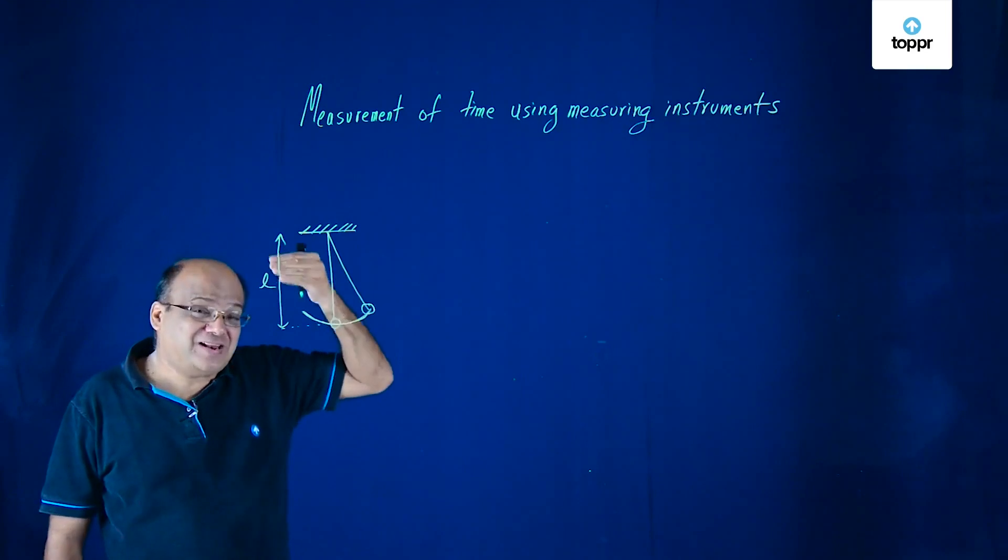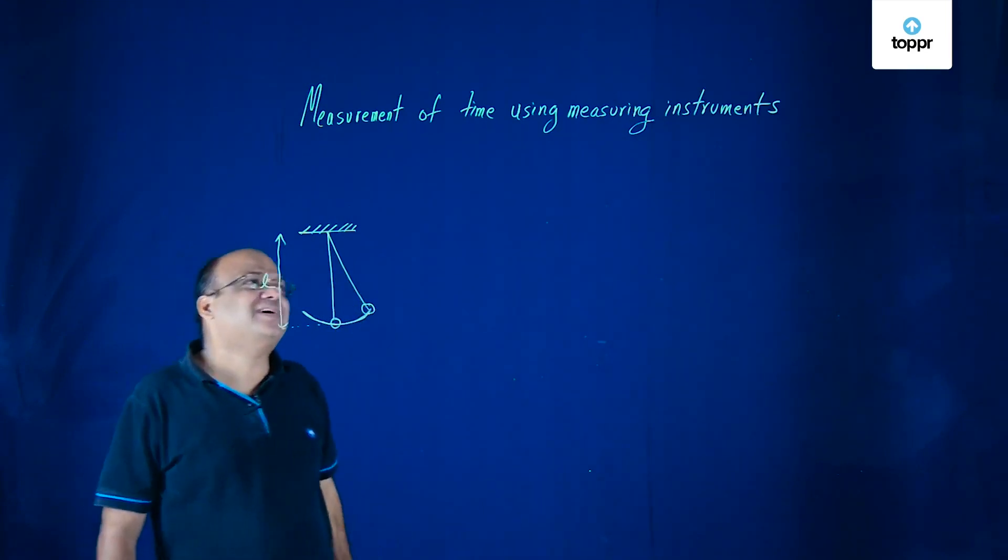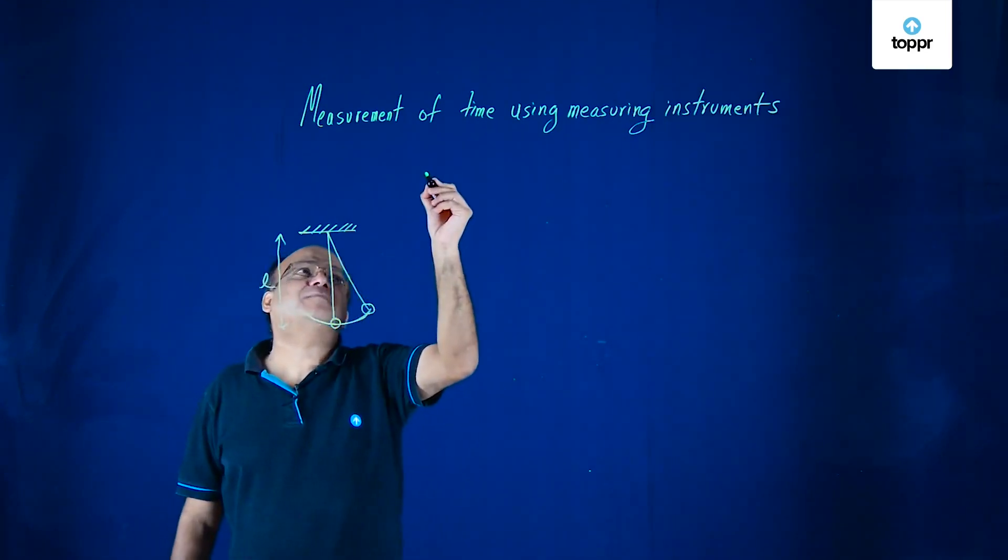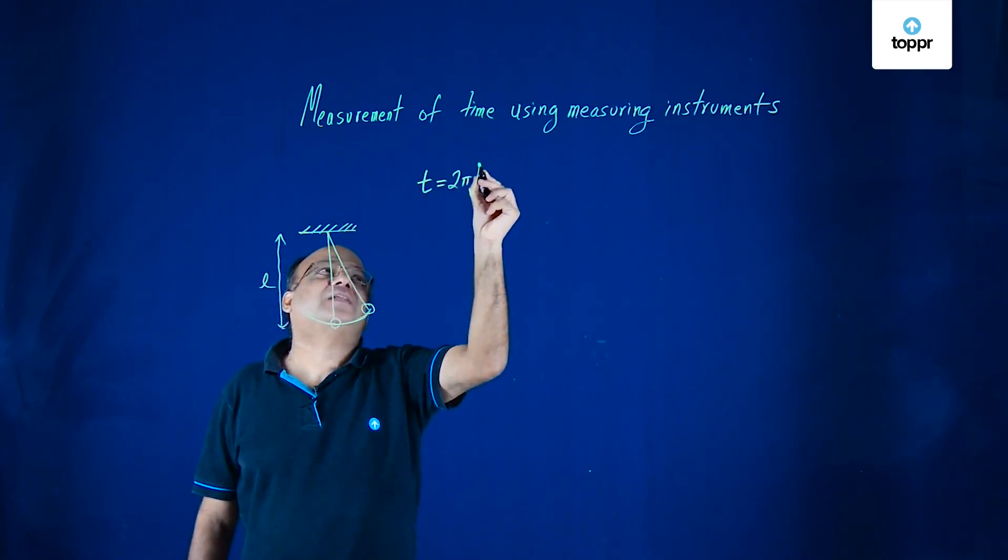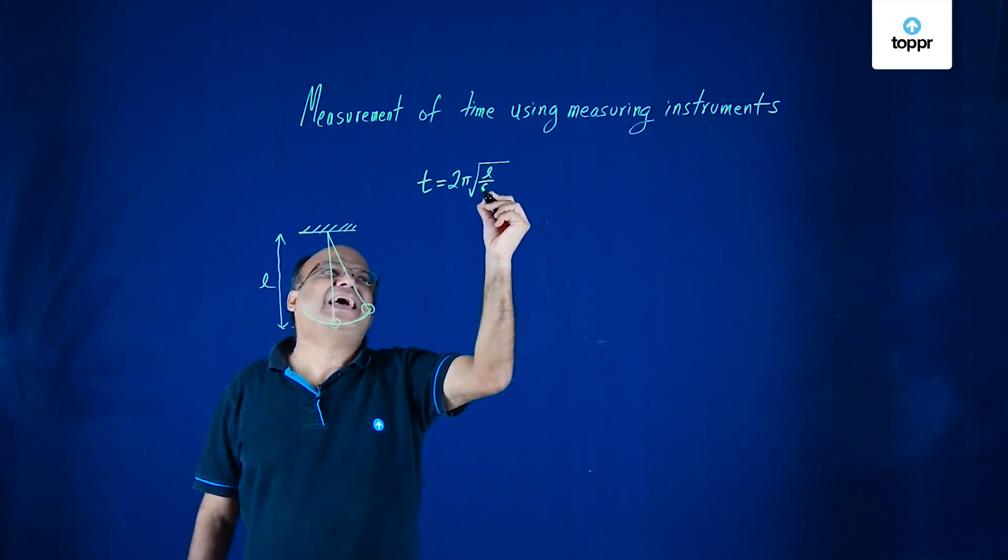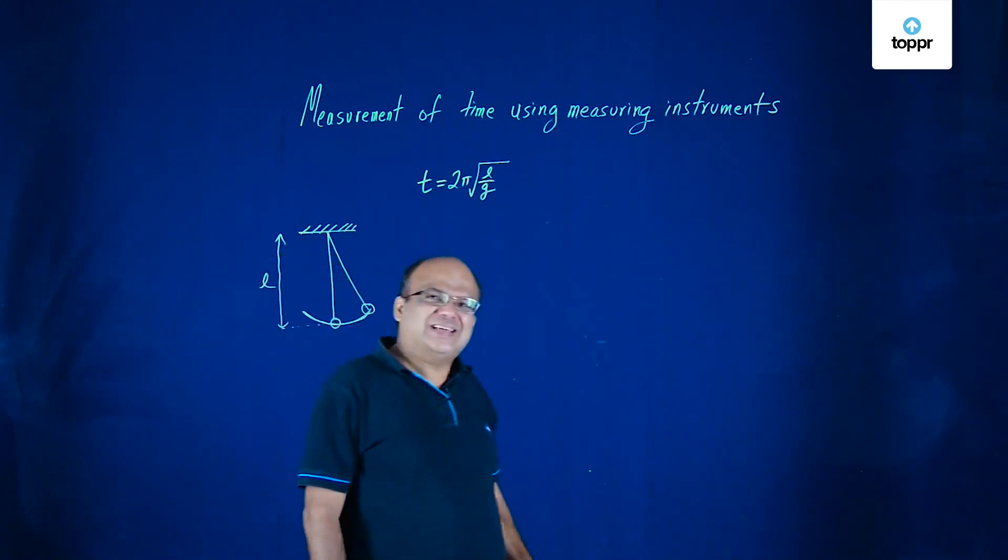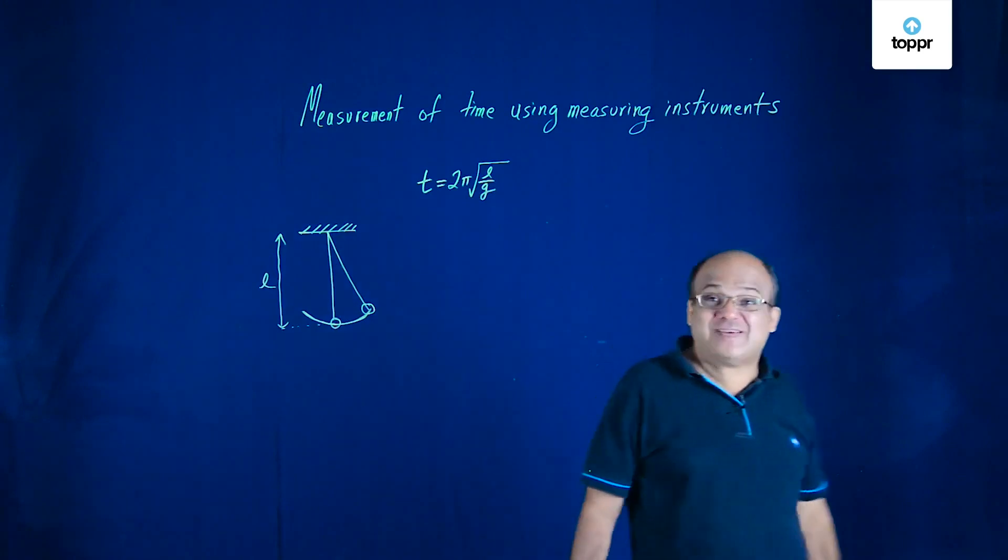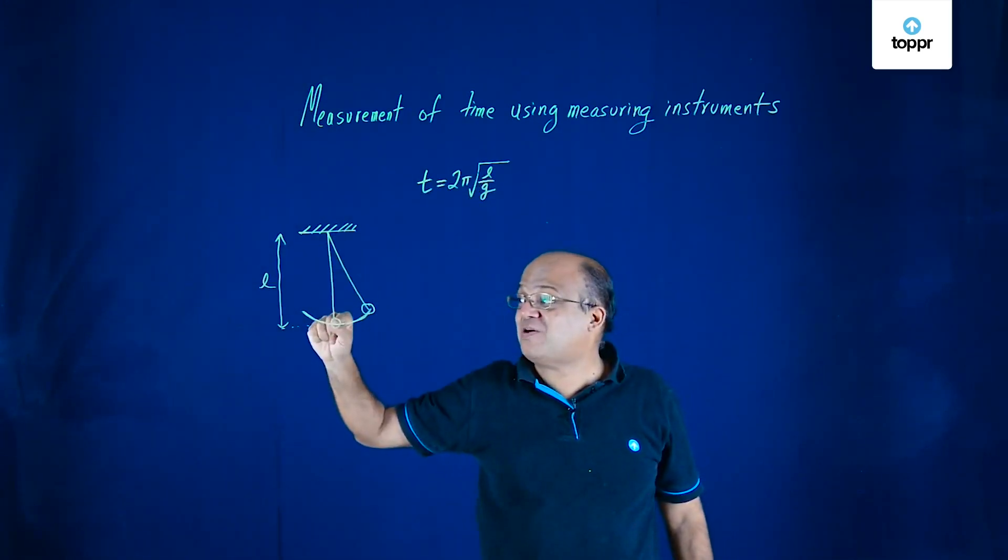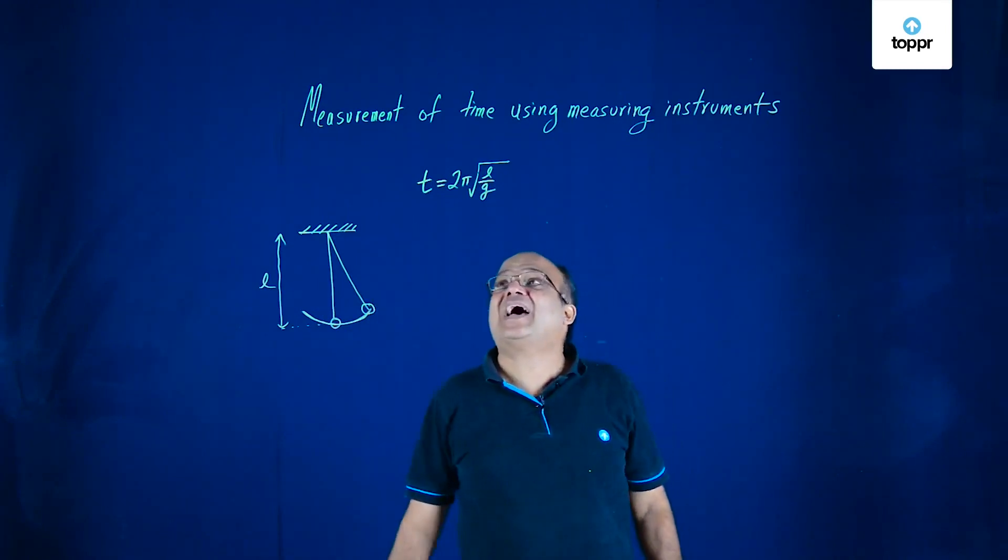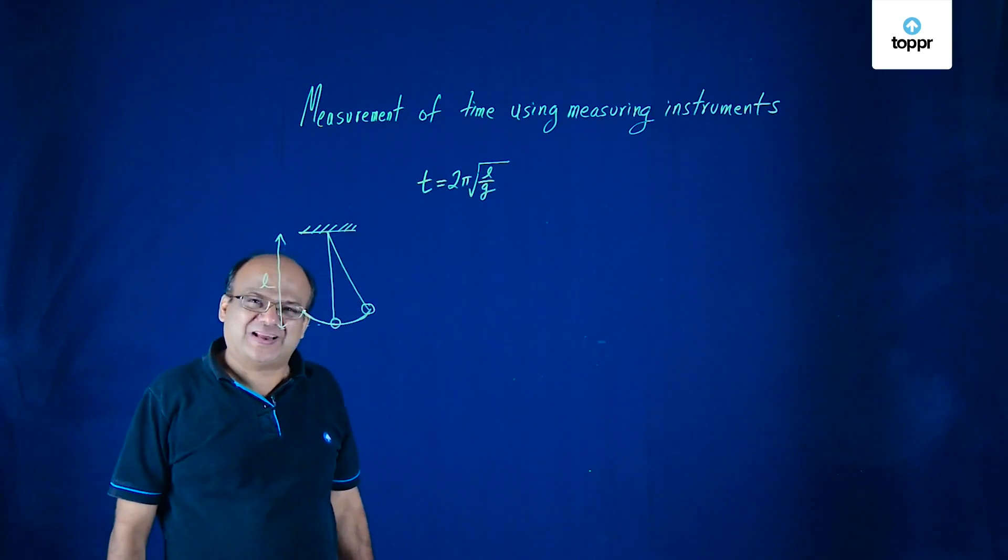This is called simple pendulum. The time period of this simple pendulum is given by this formula: 2π√(l/g). l is the length of the string, g is the acceleration due to gravity. l is actually the length up to the center of mass of the bob. So remember that: 2π√(l/g).